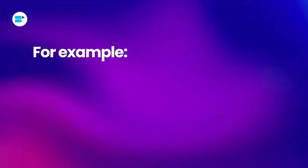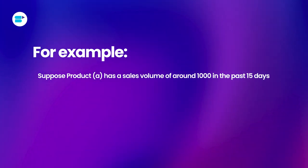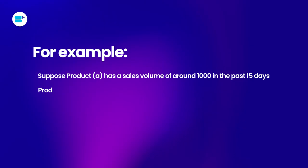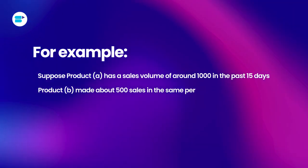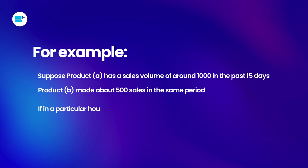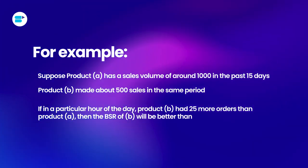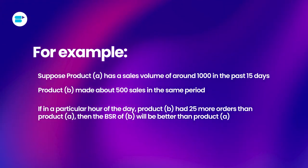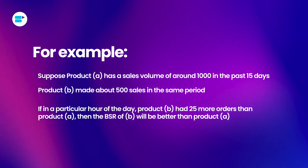For example, suppose Product A has a sales volume of 1,000 in the past 15 days, while Product B made about 500 sales in the same period. If in a particular hour Product B has 25 more orders than Product A, then the BSR of Product B will be better than Product A — demonstrating how momentum matters more than total volume.